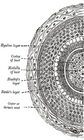The root of the hair ends in an enlargement, the hair bulb, which is whiter in color and softer in texture than the shaft, and is lodged in a follicular involution of the epidermis called the hair follicle. Bulb of hair layers consist of fibrous connective tissue, glassy membrane, external root sheath, internal root sheath composed of epithelium stratum and granular stratum Huxley's layer, cuticle, cortex and medulla of hair.